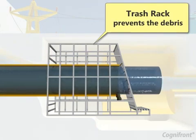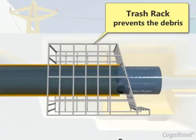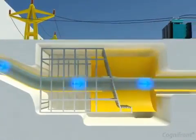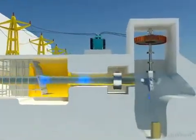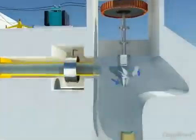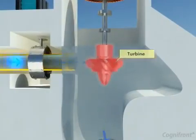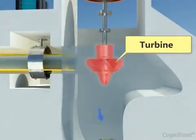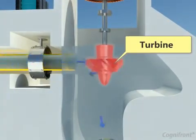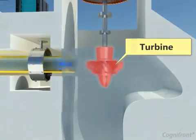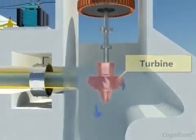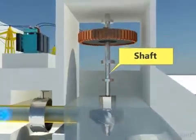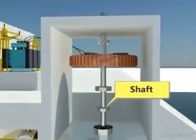A trash rack prevents debris from getting entry into the power house. Due to the force of water, the turbine starts rotating, due to which mechanical energy is produced.